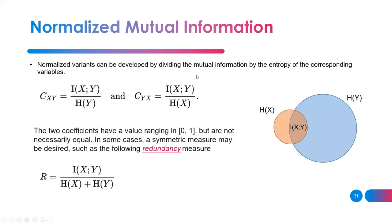There is also a normalized mutual information version, because the entropies may be of different sizes. You can normalize by dividing by H(X) or H(Y) to get a proportion of the total size remaining. In the literature, a redundancy measure is defined as the mutual information between X and Y divided by the entropies of both X and Y.